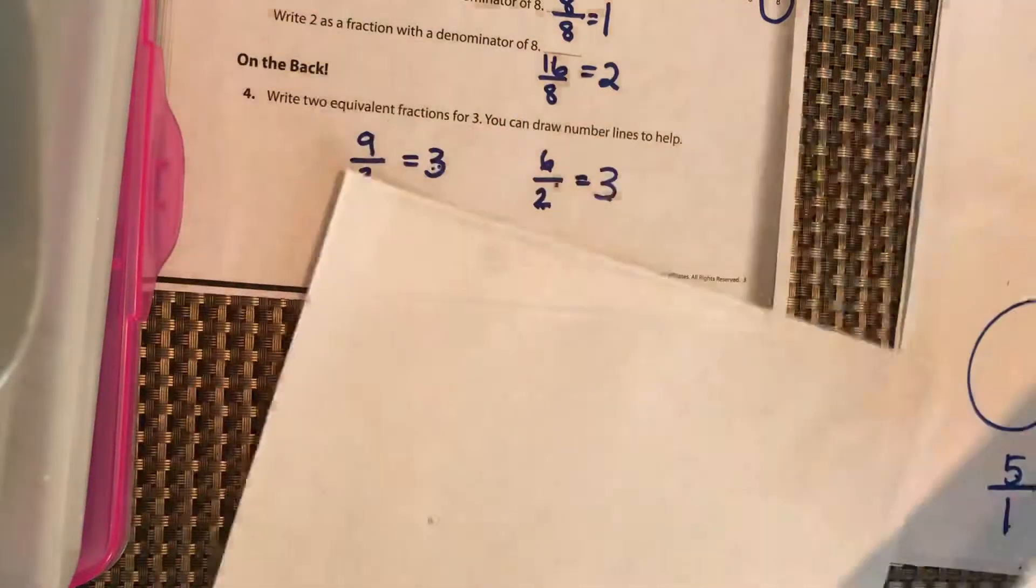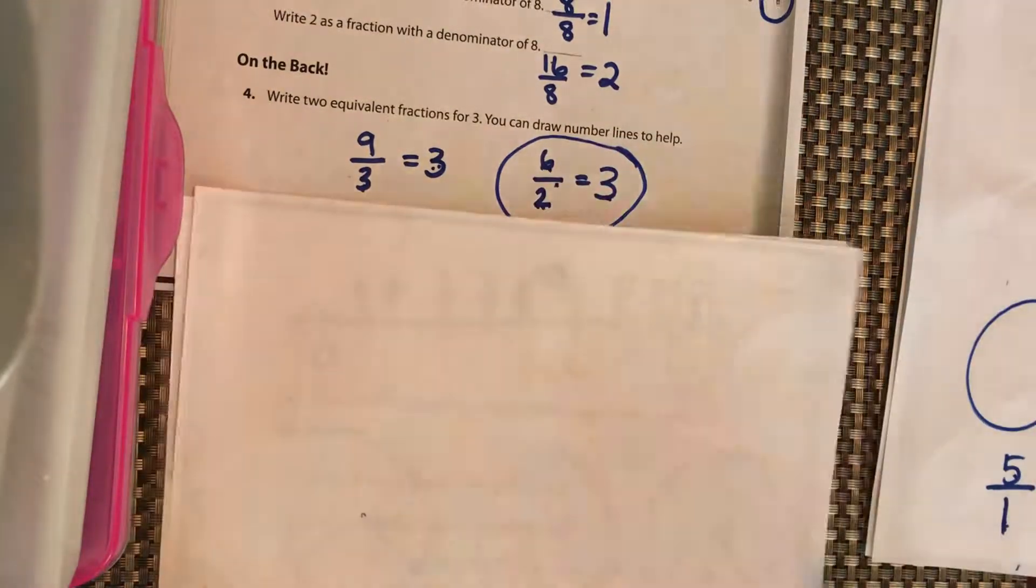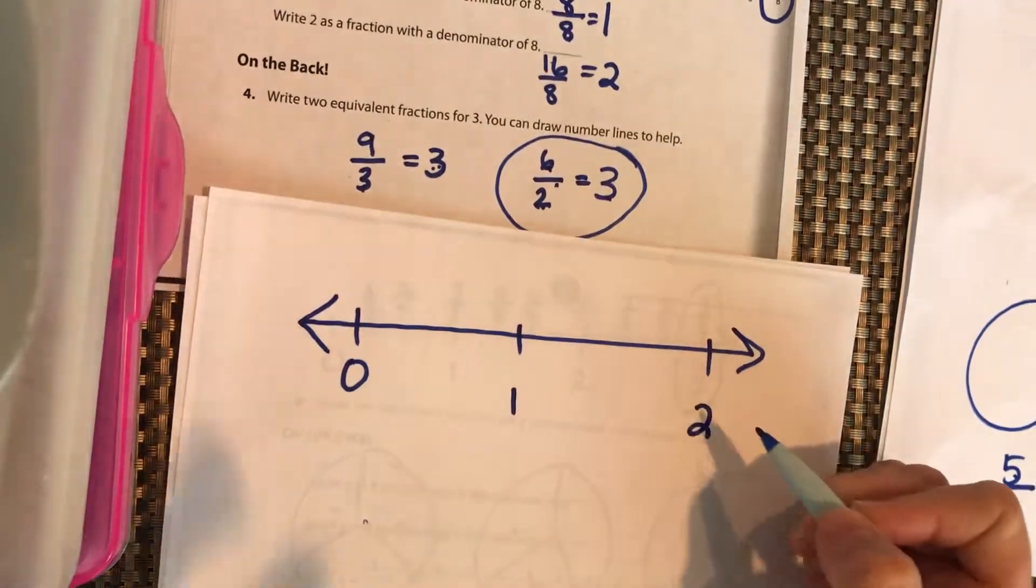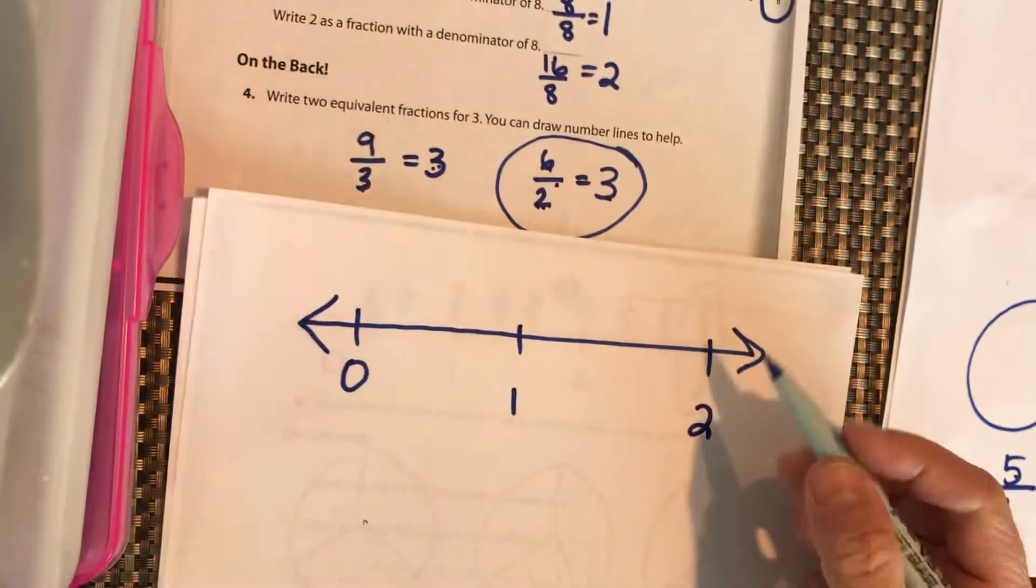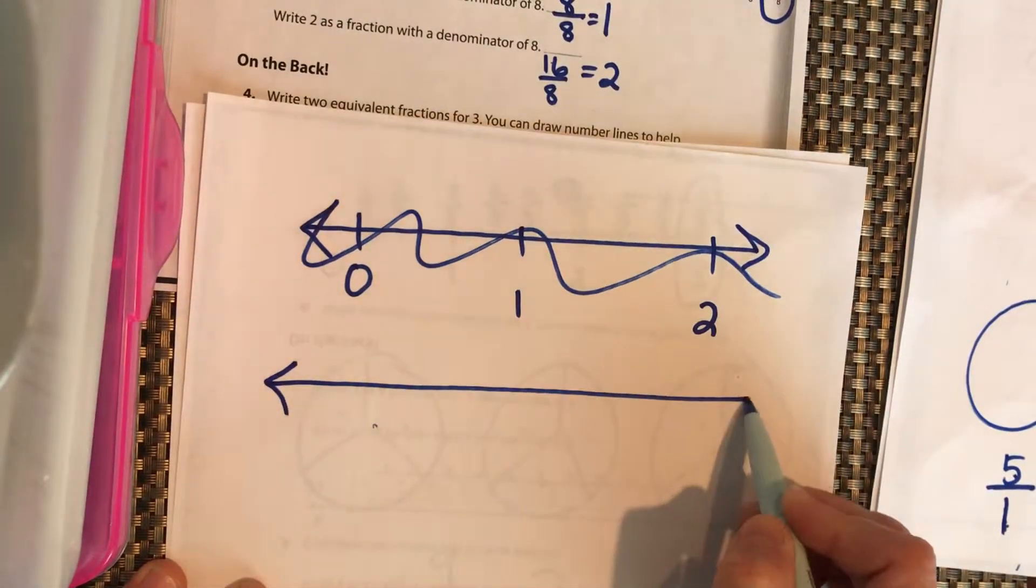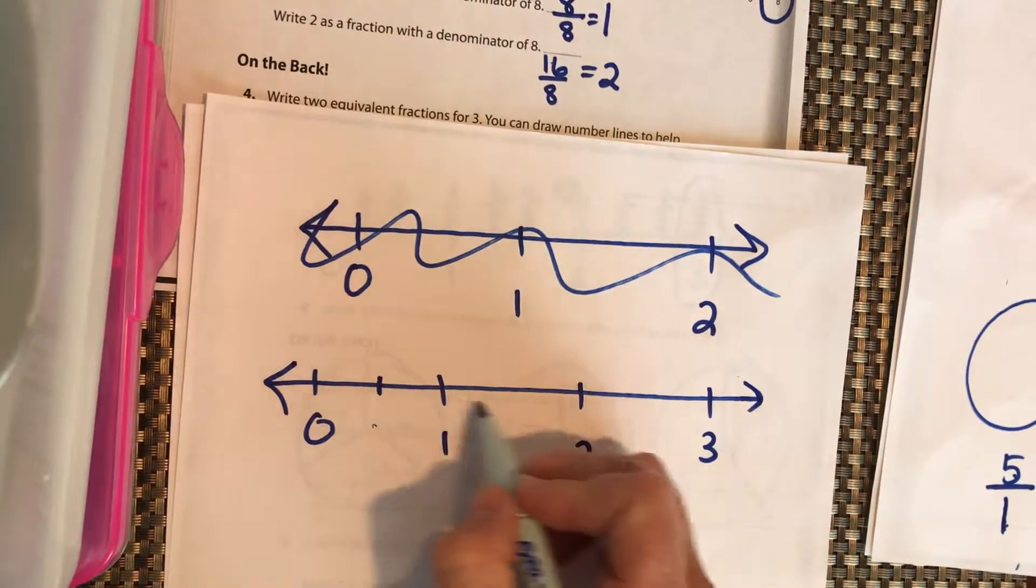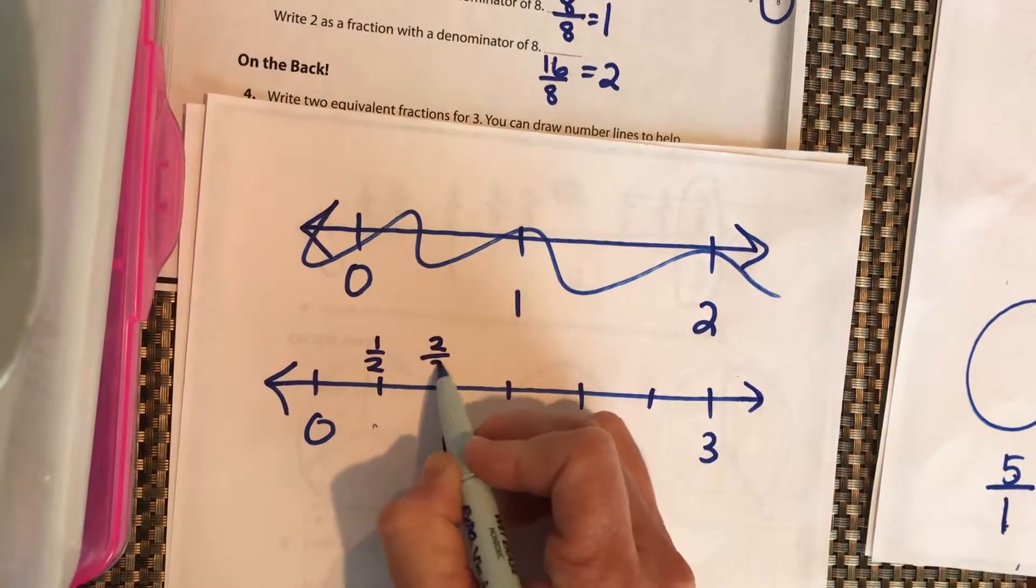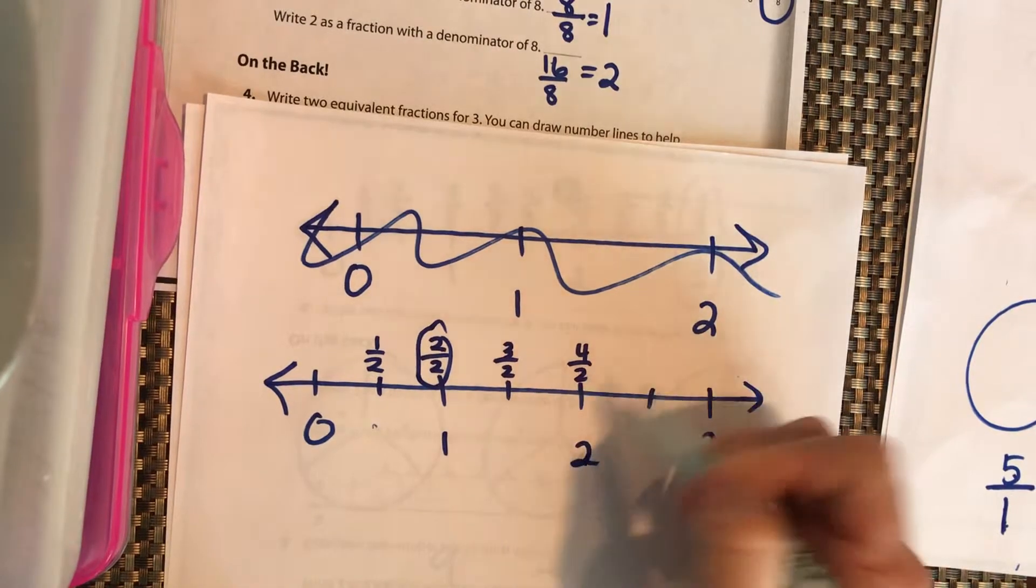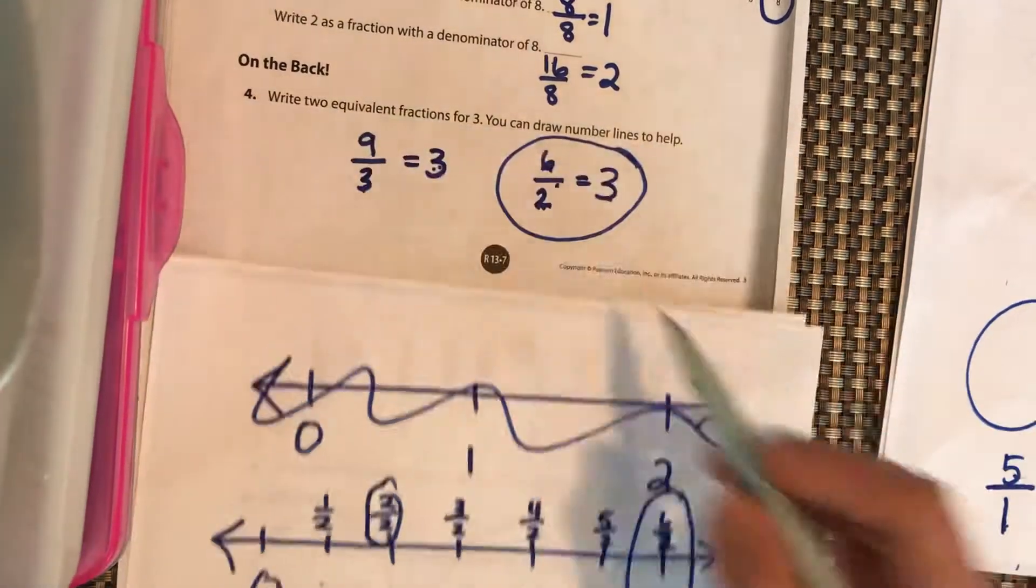So see if you can do the same for the halves. Show me 6 halves equals 3. Pause it and come back. Okay, I want halves, 2 parts. That equals 1 line in between. So this is 1 half, 2 halves, which 2 divided by 2 equals 1. 3 halves, 4 halves. 4 divided by 2 equals 2. 5 halves and 6 halves. So 6 halves is equal to 3, just like that.